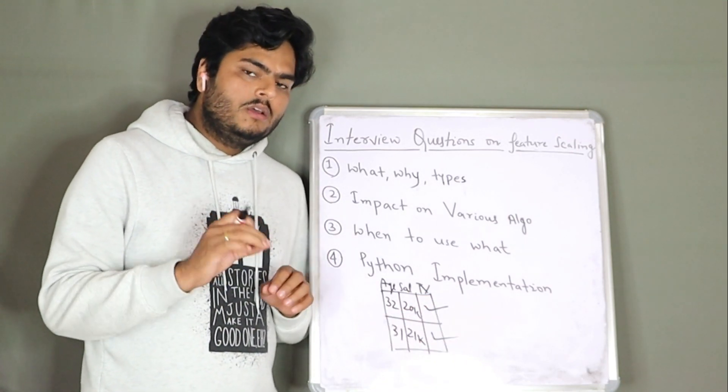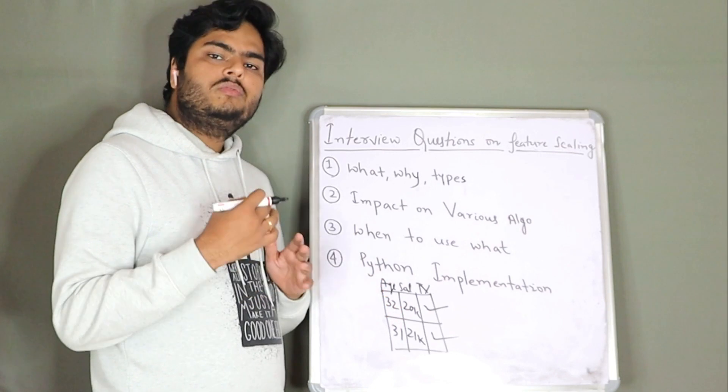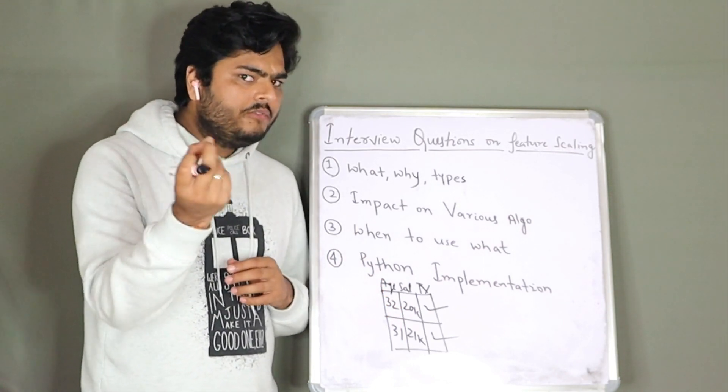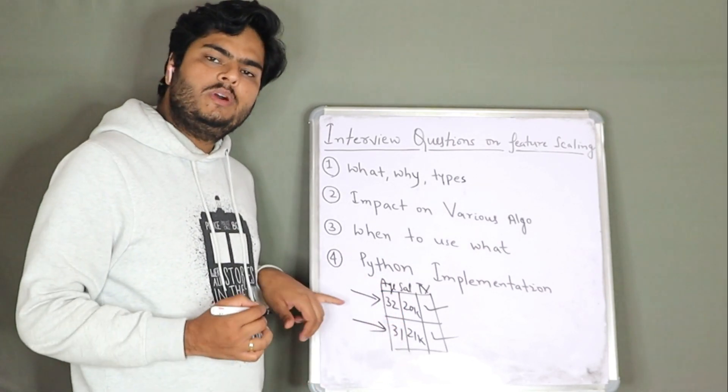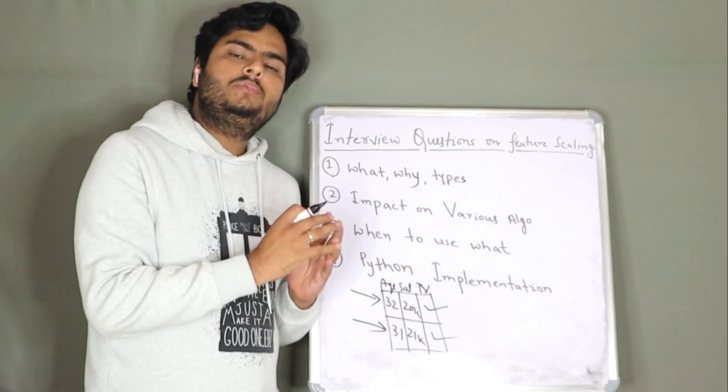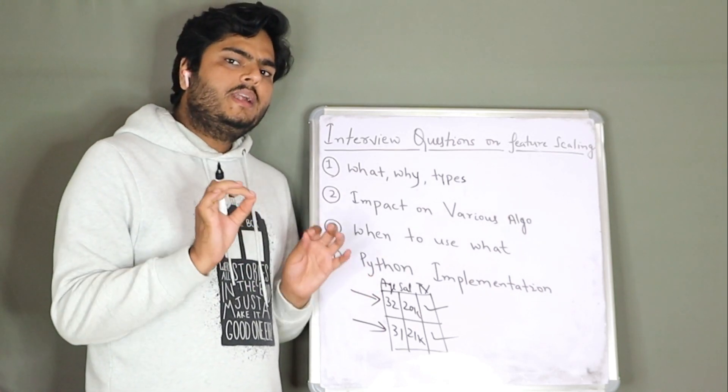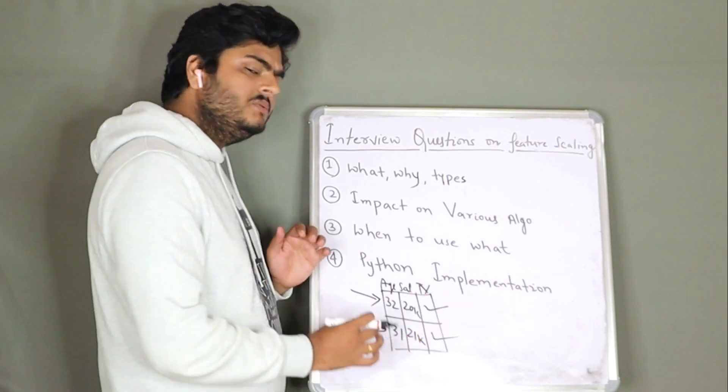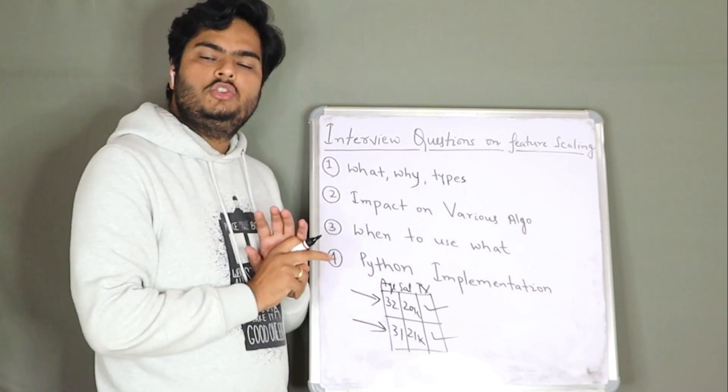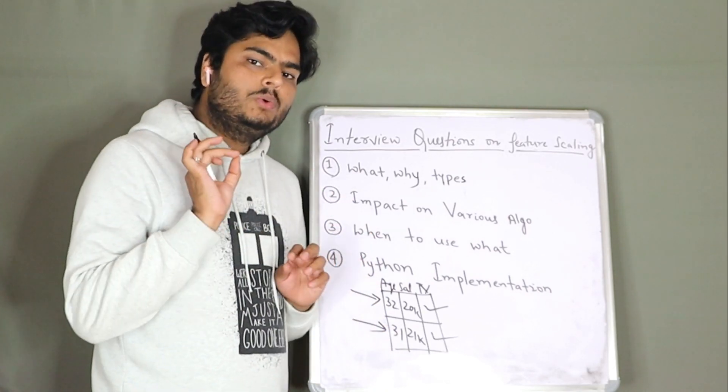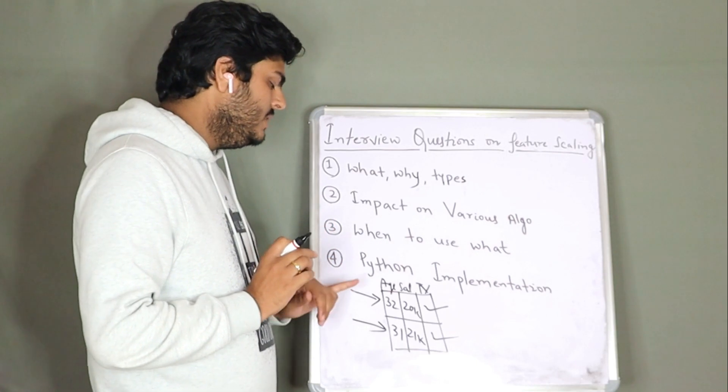Feature scaling is needed because if you see here, age is in the range of 30s, whereas salary is in the range of thousands, that too 20,000s. Now, if I ask you a question, how similar is EMP1 from EMP2? Obviously, you will go and compute some distance between these two guys. Maybe Euclidean distance, Manhattan distance or whatever. In that case, the variable which is having large magnitude, in this case salary, will suppress the impact of variable which is having less magnitude. We don't want that to happen.